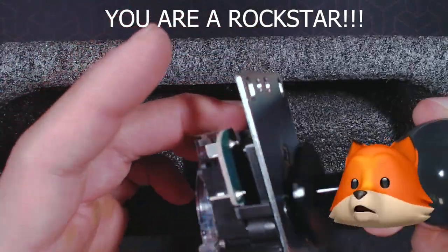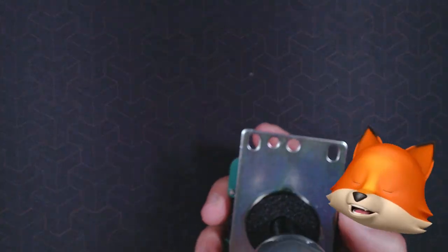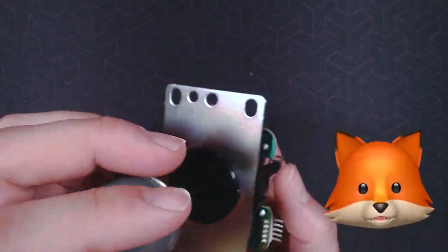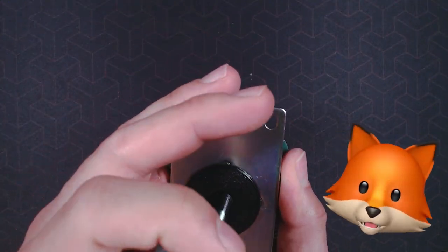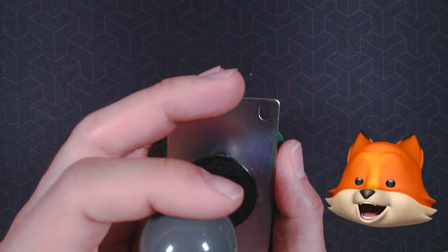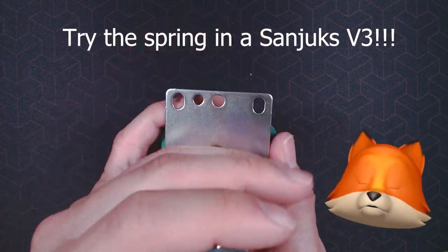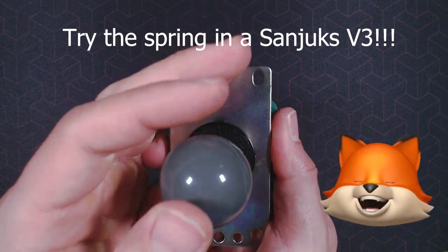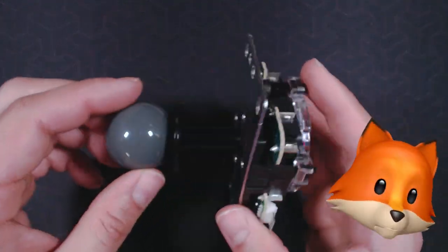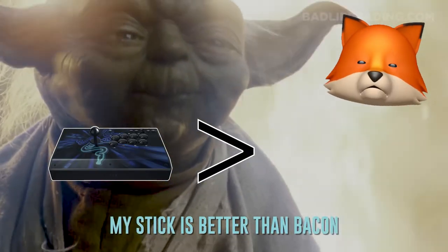So now you have a wonderfully color-coded Sanwa JLF that is hopefully to your preference. In the comment section down below let me know what your favorite combination is. And one last thing to note if some of you very special individuals that have a Sanjuks V3 these springs are also compatible with that as well. You're welcome. And hopefully this makes your stick is better than bacon.